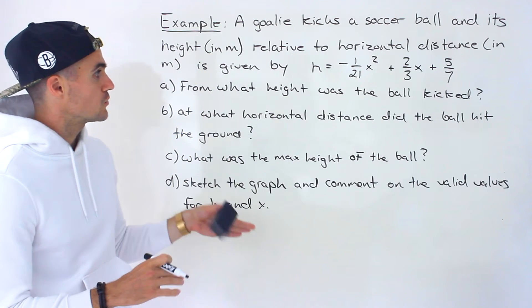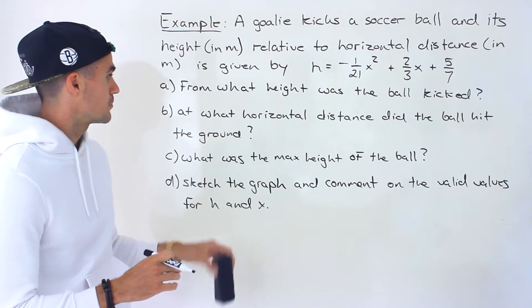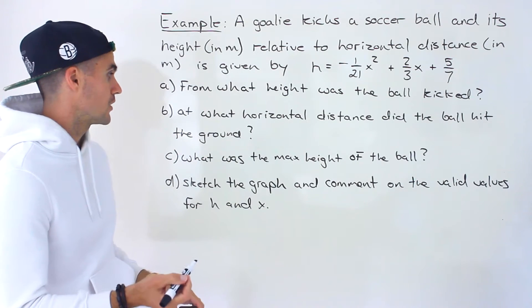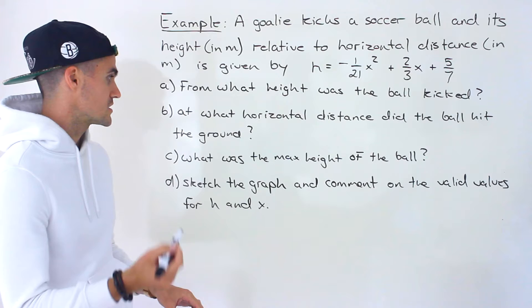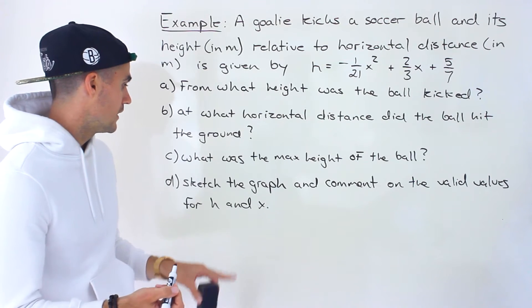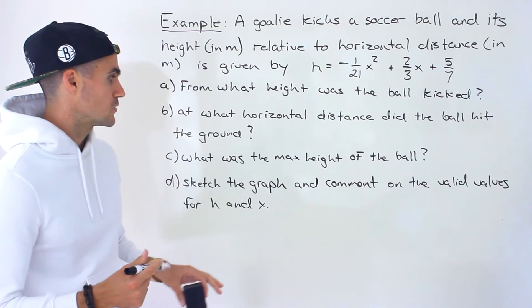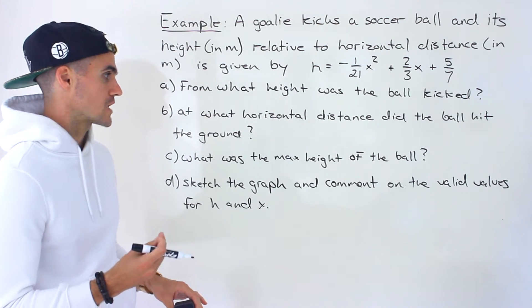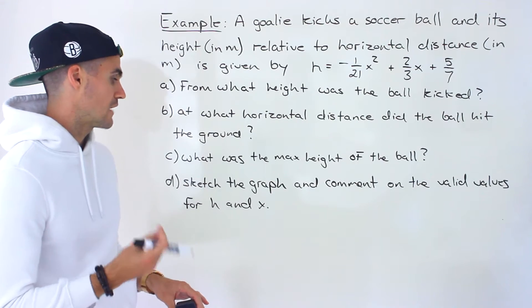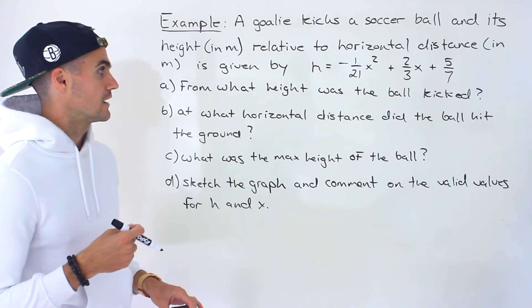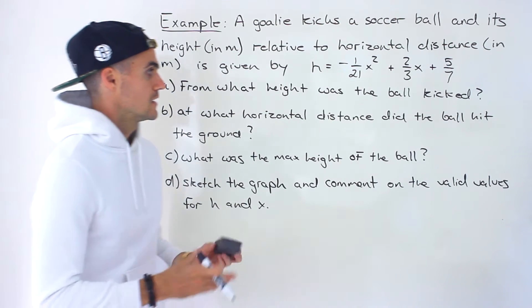Part A: from what height was the ball kicked? Part B: at what horizontal distance did the ball hit the ground? Part C: what was the max height of the ball? And part D: we have to sketch the graph and then comment on the valid values for h and x.